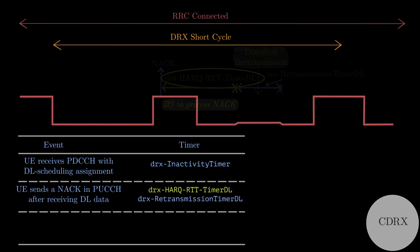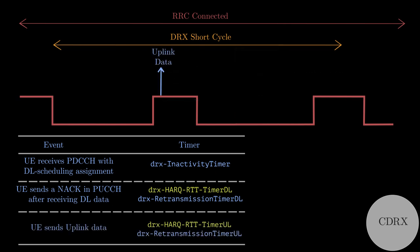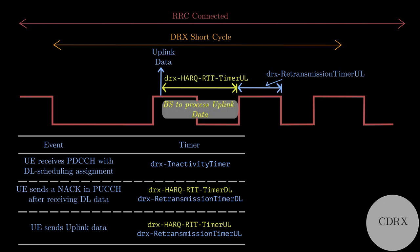Another event is when a UE completes an uplink transmission. After transmitting uplink data, UE waits for a duration of DRX HARQ-RTT timer UL and then stays awake for a duration of DRX retransmission timer UL. This is because in case base station receives the uplink packet in error, then UE has to be awake to listen to the retransmission request by base station.